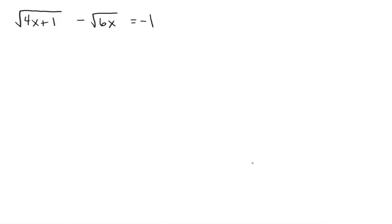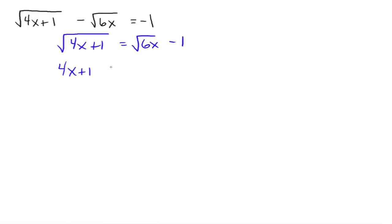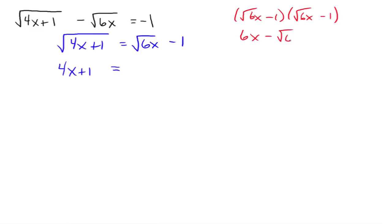This one's got a couple of radicals too. Isolate one of them — it doesn't really matter which one, but I'll isolate the uglier looking one. Adding radical 6x over to the other side. Squaring the left side undoes the square root and you're just left with 4x plus 1. Squaring the right side: that's the square root of 6x minus 1 times the square root of 6x minus 1. That gives 6x plus 1 minus 2 square root of 6x. We still have a radical, but we started with 2 and we're down to 1.